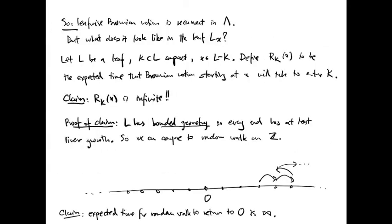In summary, we have shown that leafwise Brownian motion is recurrent in the compact lamination lambda. But what does it look like when we restrict to a leaf L sub x?